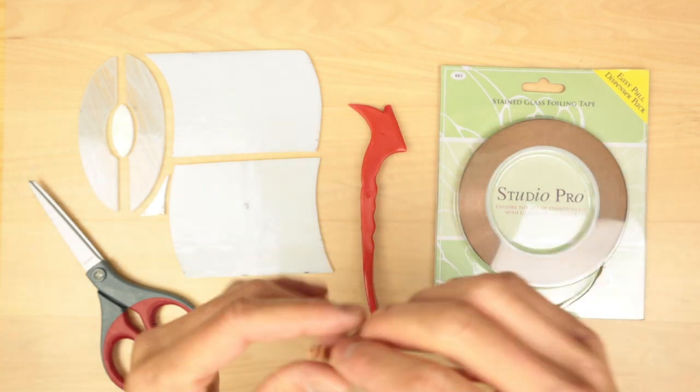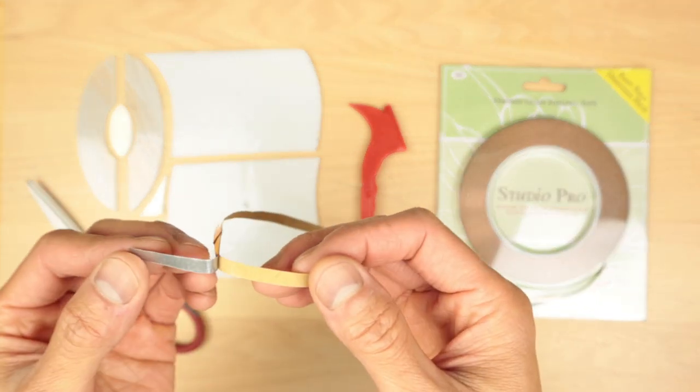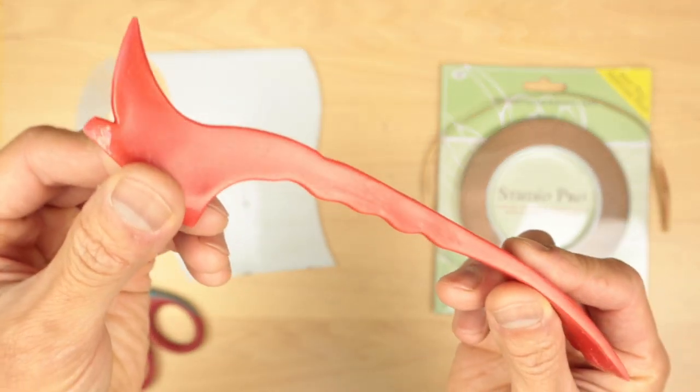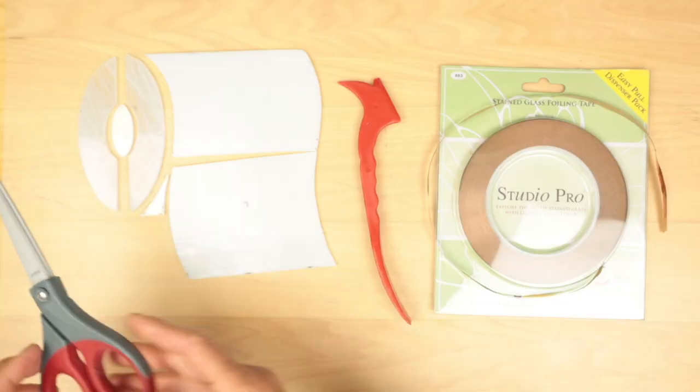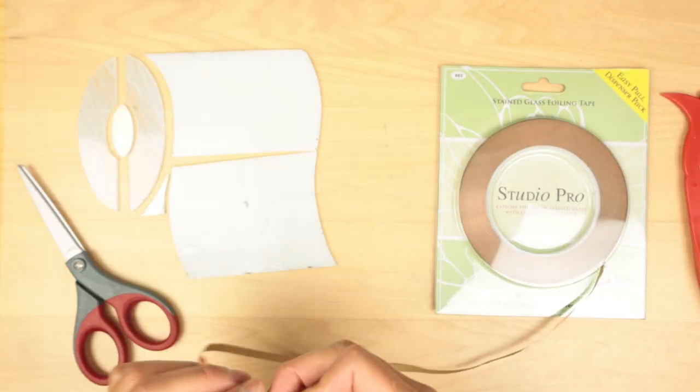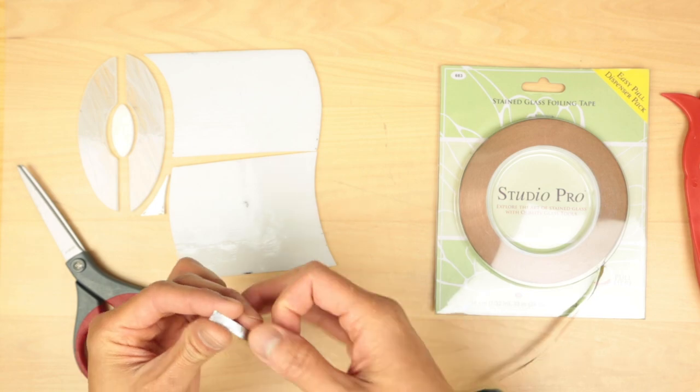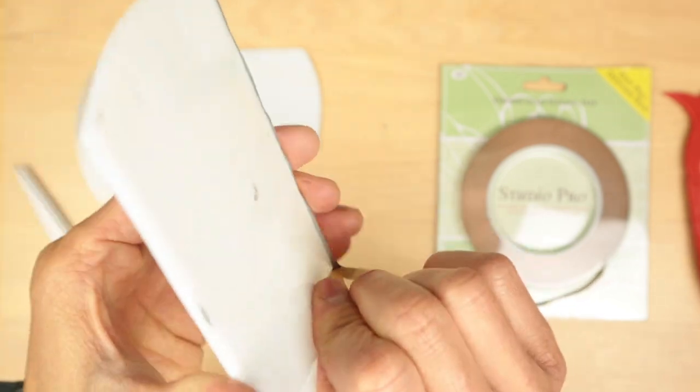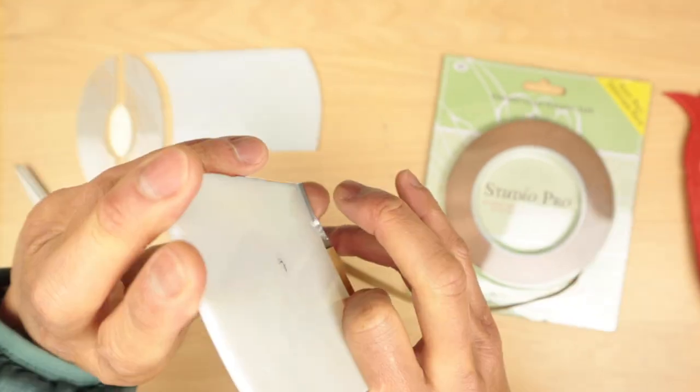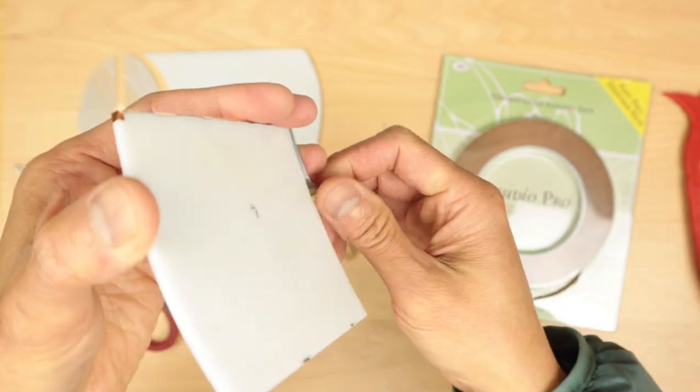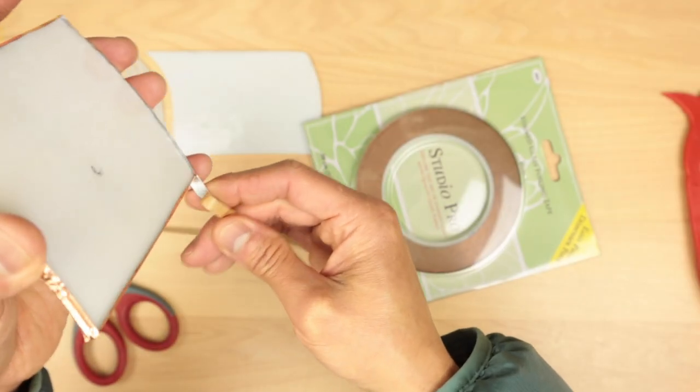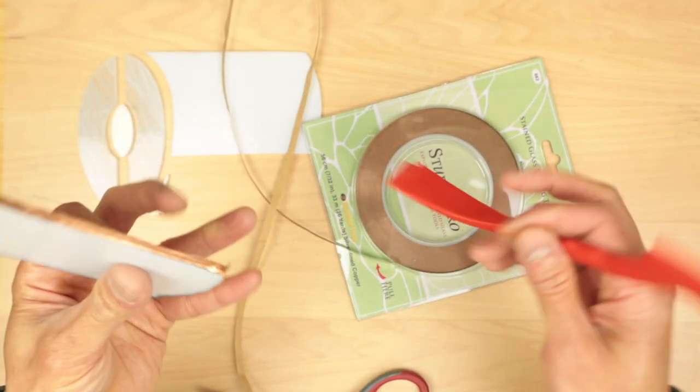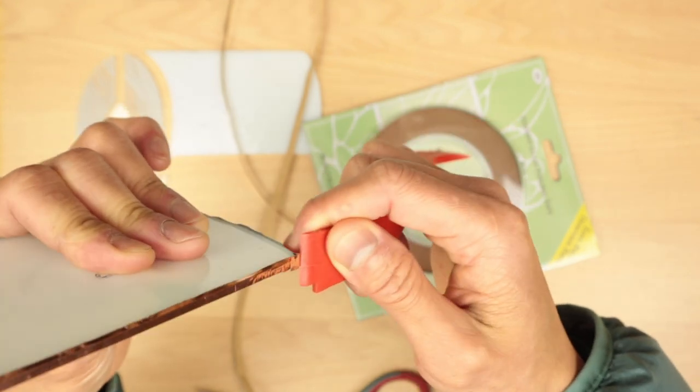So I have here the copper foil tape. This one in particular is the 7/32nds of an inch width and also in the silver backing. And then we have our fid tool, this will help burnish all the copper foil onto the glass. And then we have our scissors just to cut the tape. So let's start by applying this onto the glass itself. I like to fold it over just to help it maintain and stay on the tape. Take your time on this, make sure it is nice and even. This will give you nice and straight lines when you're going to do the soldering. And then as you come around to the end, just do a slight overlap and clip it off.